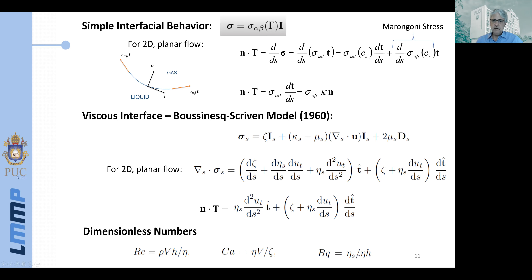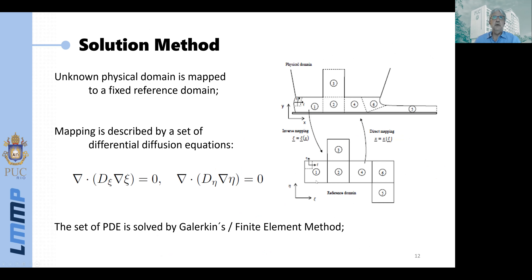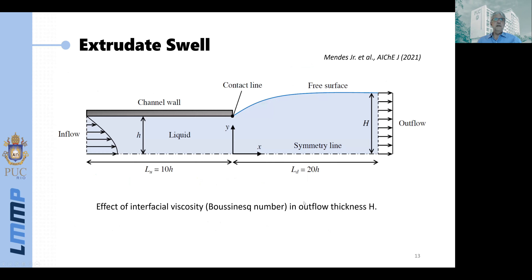The important dimensionless numbers for this flow are the Reynolds number, the capillary number, and the Boussinesq number — the ratio of viscous stress at the interface to viscous stress in the bulk. If there's no viscous interfacial behavior, the Boussinesq number equals zero, which corresponds to the simple interface case typically reported in the literature. We use the standard solution method: momentum and mass conservation equations are coupled with mesh generation equations and solved using Galerkin's finite element method.